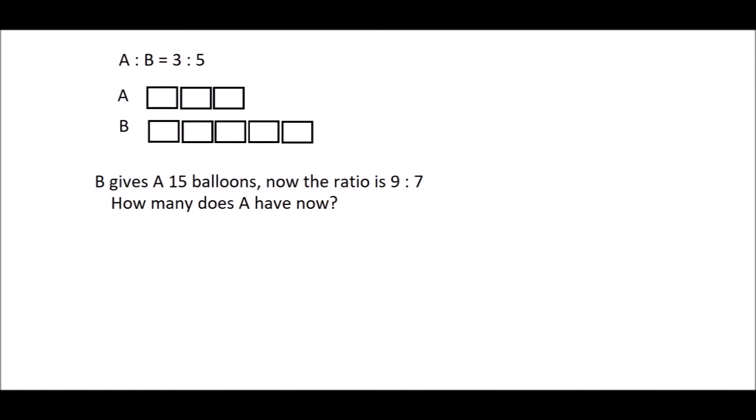So let's add the ratio from the beginning and the end. In the beginning it's 3 to 5, which equals 8. And in the end, 9 plus 7 equals 16. Since they are supposed to be the same, so let's make it the same. 8 is turned to 16 by multiplying it with 2.